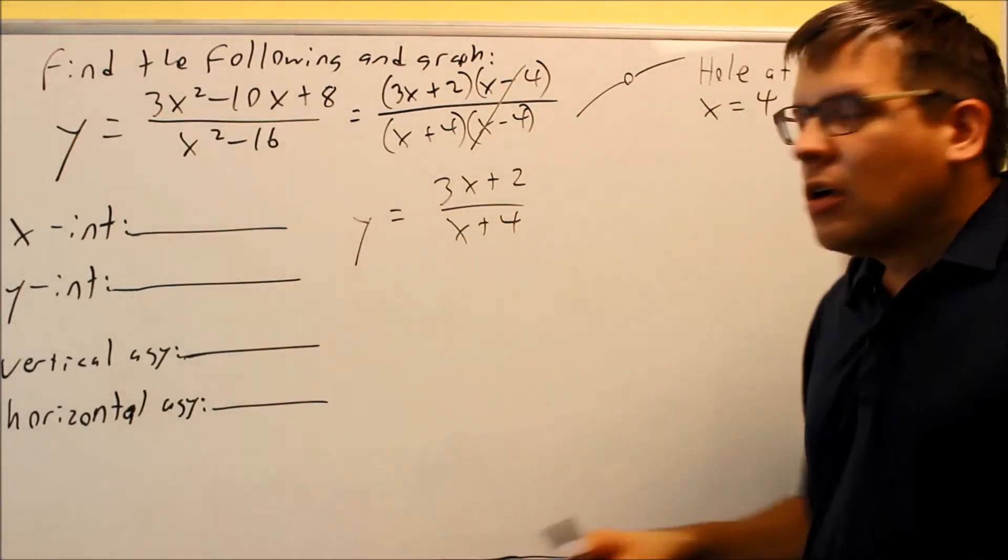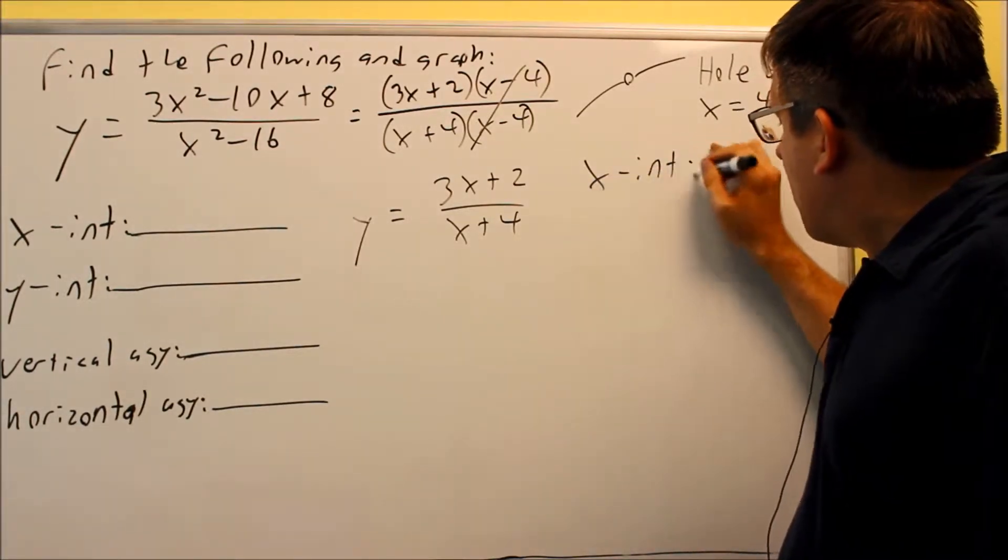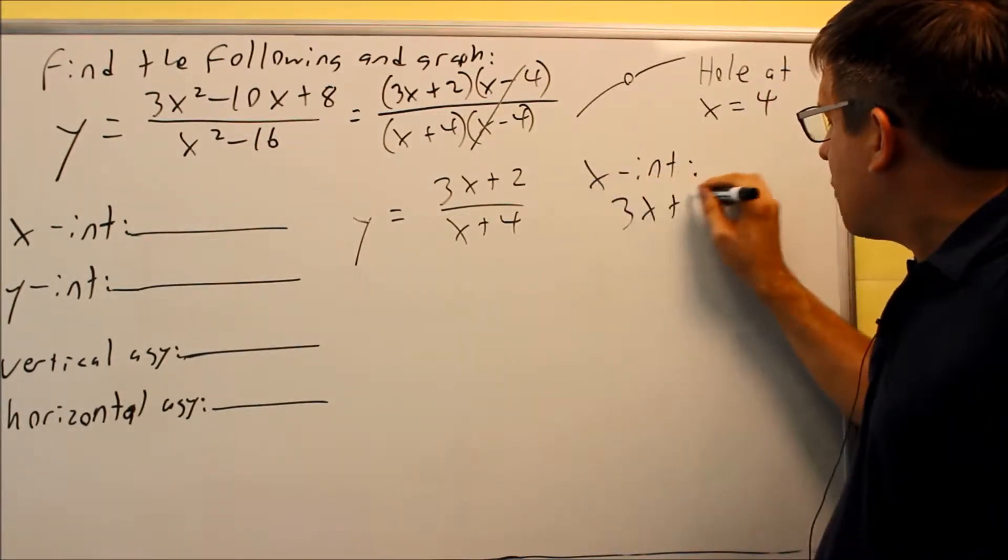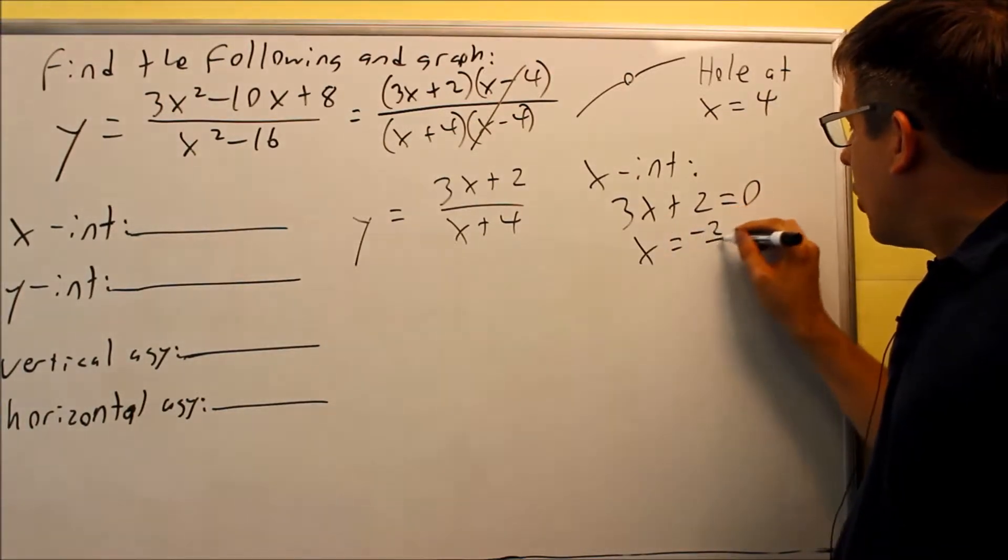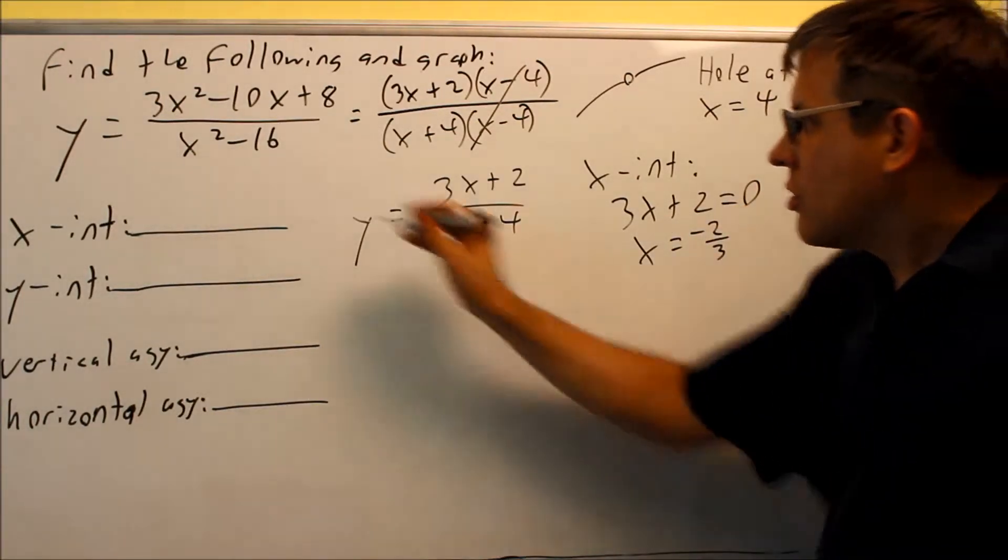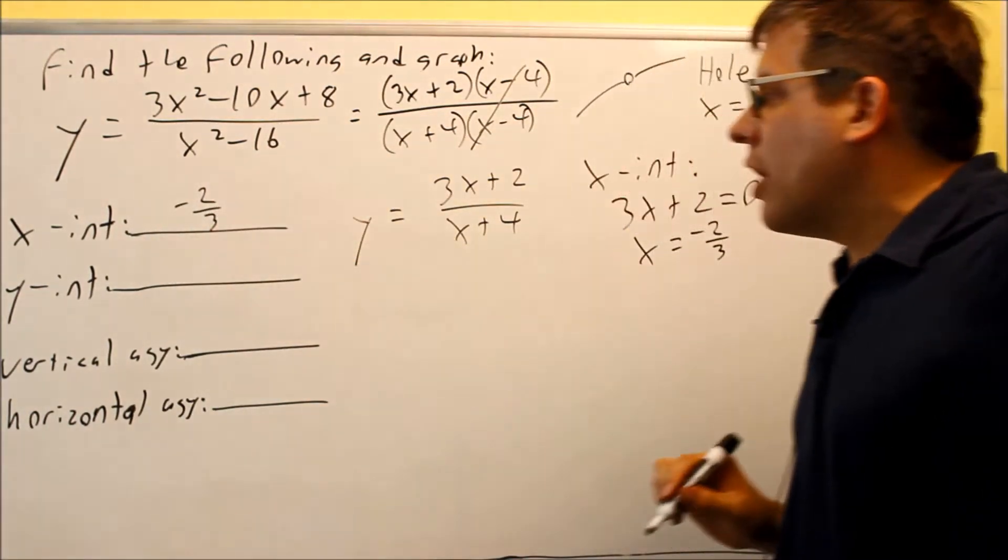Okay, so now once we talked about that now we're going to go ahead and answer these. So x-intercept, x-intercept you're going to set the top equal to zero, three x plus two equals zero. If you solve for that you're going to get negative two-thirds. So negative two-thirds is your x-intercept.